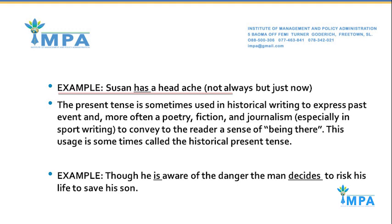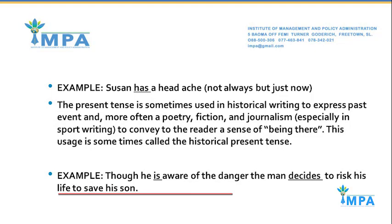The present tense can also express an action or condition that exists only now. For example: 'Susan has a headache' — only now, not always, but just at this moment. The present tense is also sometimes used in historical writing to express past events, and more often in poetry, fiction, and journalism — especially in sports writing — to convey to the reader a sense of being there. This usage is called the historical present tense. Example: 'Though he is aware of the danger, the man decides to risk his life to save his son.'